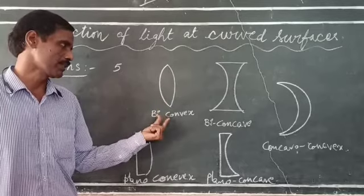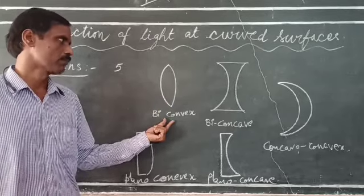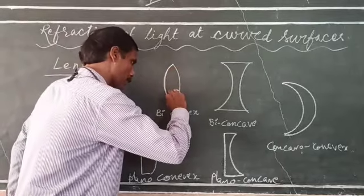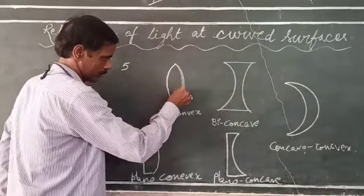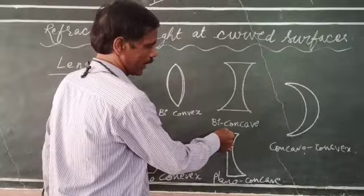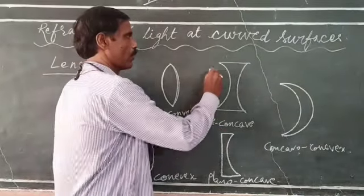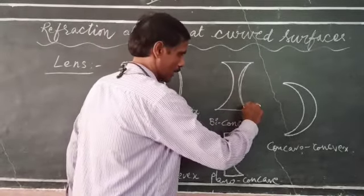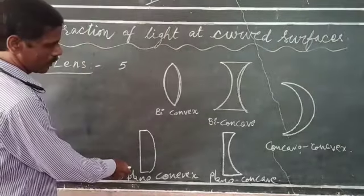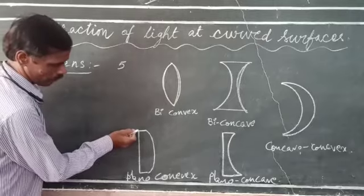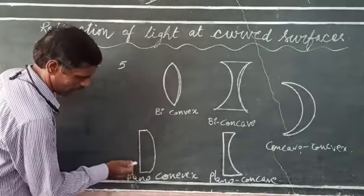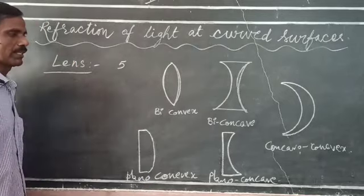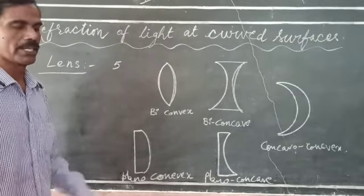The types of lenses: the first one is biconvex, in which both the surfaces are bulged out. Biconcave, in which both the surfaces are bulged inside. Planoconvex, in which one of the sides is plane and the other surface is convex shape — that is, bulged outward.